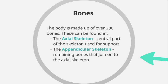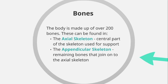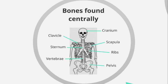The axial skeleton includes things like the ribs, the vertebral column, and the cranium. We also have the appendicular skeleton, which is all the remaining bones that join onto the axial skeleton. When it comes to remembering all the bones, there are 19 different bones we need to know for the exam. I'm going to teach them in three different parts. First of all, we have bones that are found centrally.